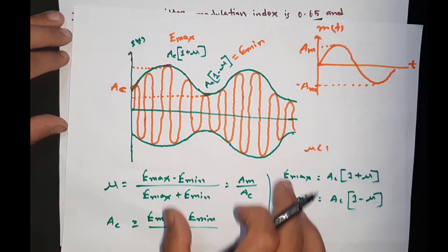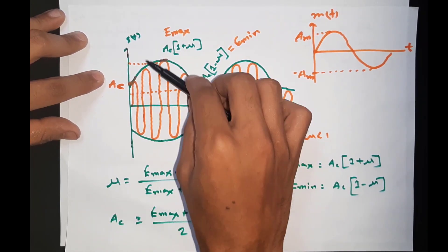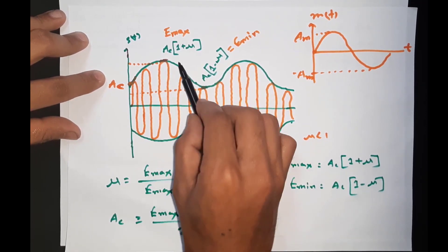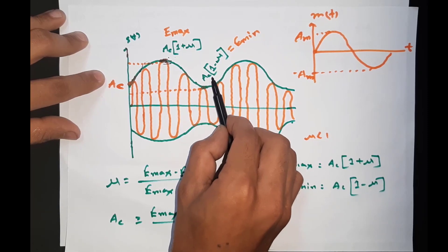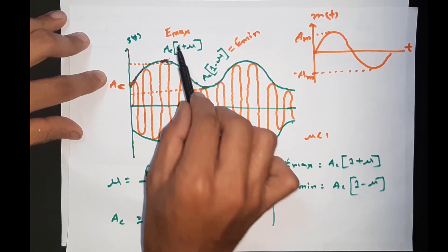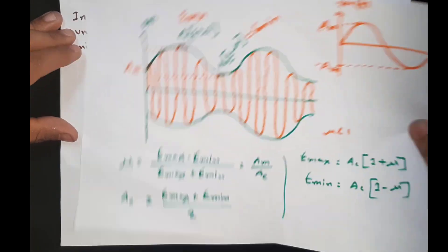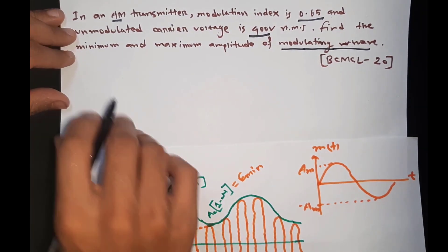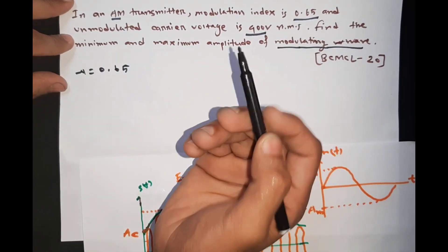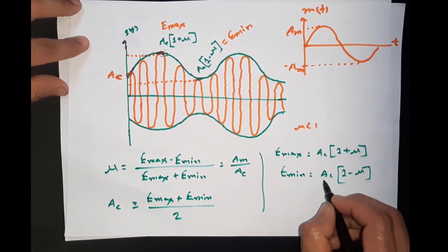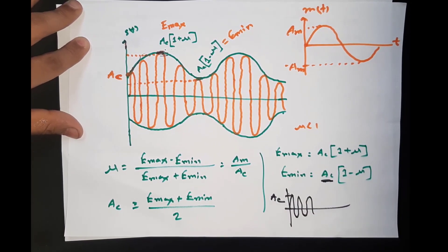This is the basic theory of the Amplitude Modulation wave, shown from a graph. This is the carrier signal, which is a high-frequency carrier signal. It is AC, and it is unmodulated. This is the video reference for the basic theory of Amplitude Modulation.